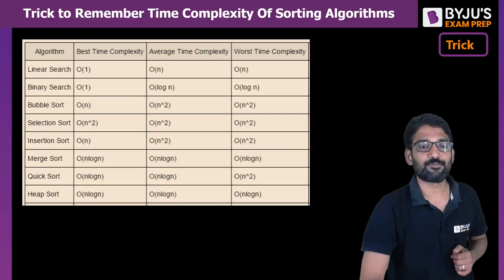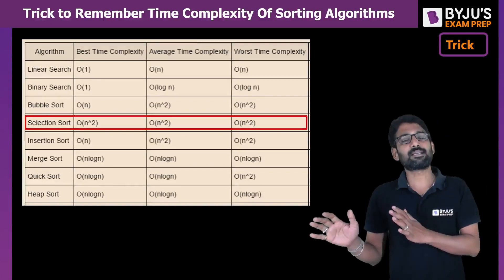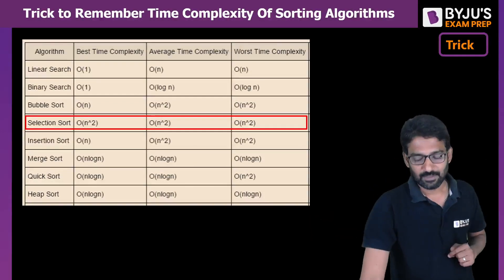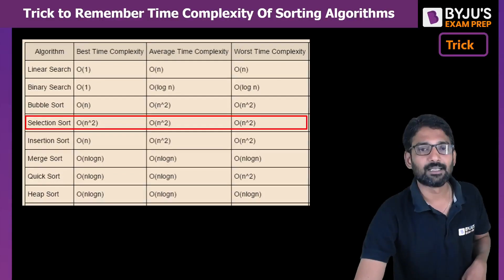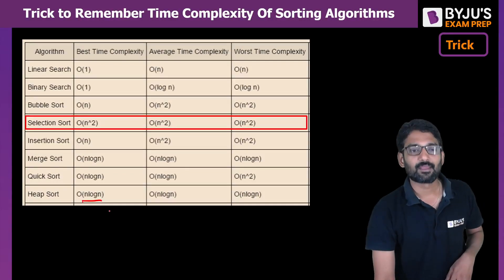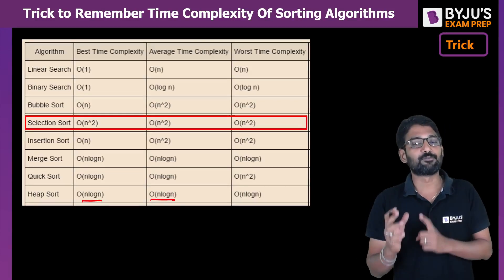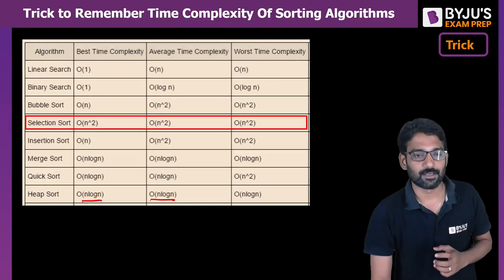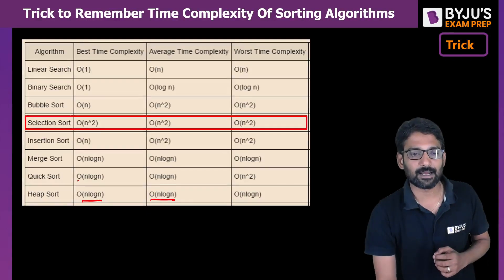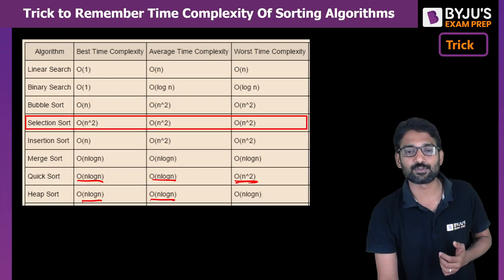Selection sort, if you look at it, in all cases it is O(n²) only. And finally, if you look at quick sort, in the best case and average case it is O(n log n), but in the worst case it is O(n²).